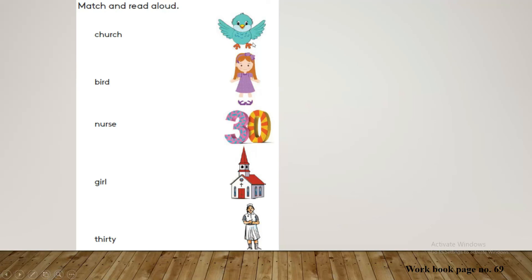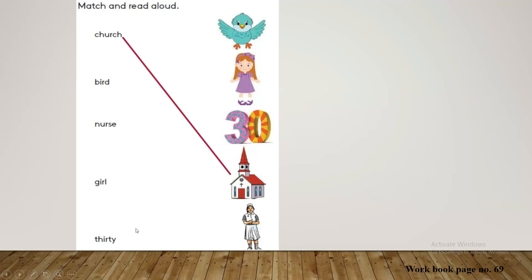Now look at the pictures. What are the pictures? Bird, girl, 30, church, nurse. It is a very easy activity. You have to match with the correct word. Look at the example — church, you have to match with the correct picture. Then bird — it is bird. Nurse — this is nurse. Girl — she is a girl. 30 — it is number 30.